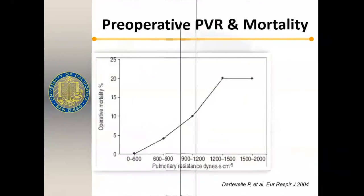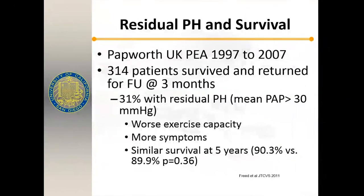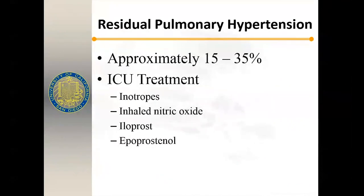Residual pulmonary hypertension occurs in 15 to 35% of cases. From the Papworth group, 31% had residual pulmonary hypertension at 3 months with a mean PA pressure above 30. These patients had worse exercise capacity and more symptoms, but five-year survival was similar to those without residual pulmonary hypertension — so they still likely have a survival benefit long-term. In the ICU, management includes inotropes, inhaled nitric oxide, iloprost, and prostacyclin. We normally diurese the patient, use inotropes, and gradually wean as the lung and ventricle remodel.